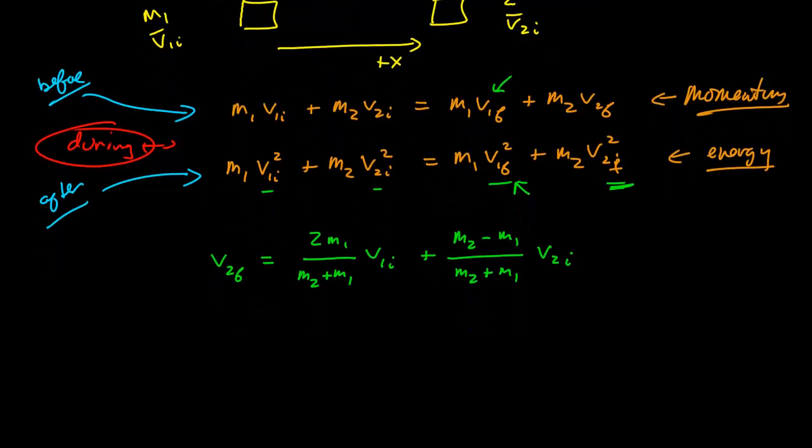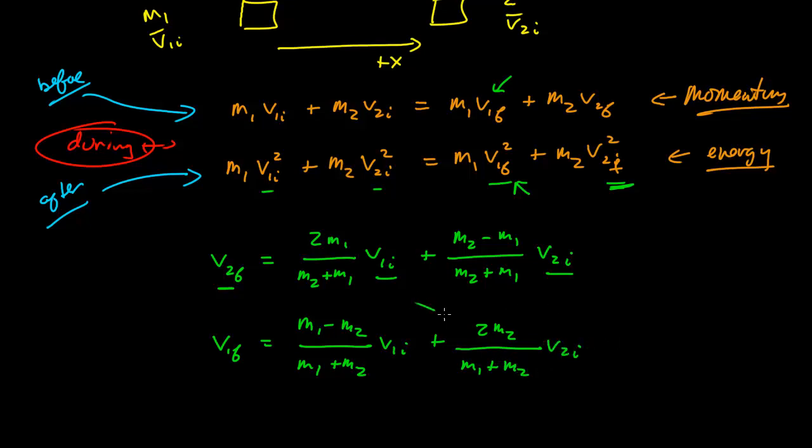So this is the final velocity of mass 2 in terms of the initial velocities, and each one has a coefficient that's a function of both masses. We can find a similar equation for the first mass, and you'll see it's quite symmetric. It's equal to (m1 - m2)/(m1 + m2) * v1i + (2m2)/(m1 + m2) * v2i. You can see that these two terms are similar, and these two terms are similar.